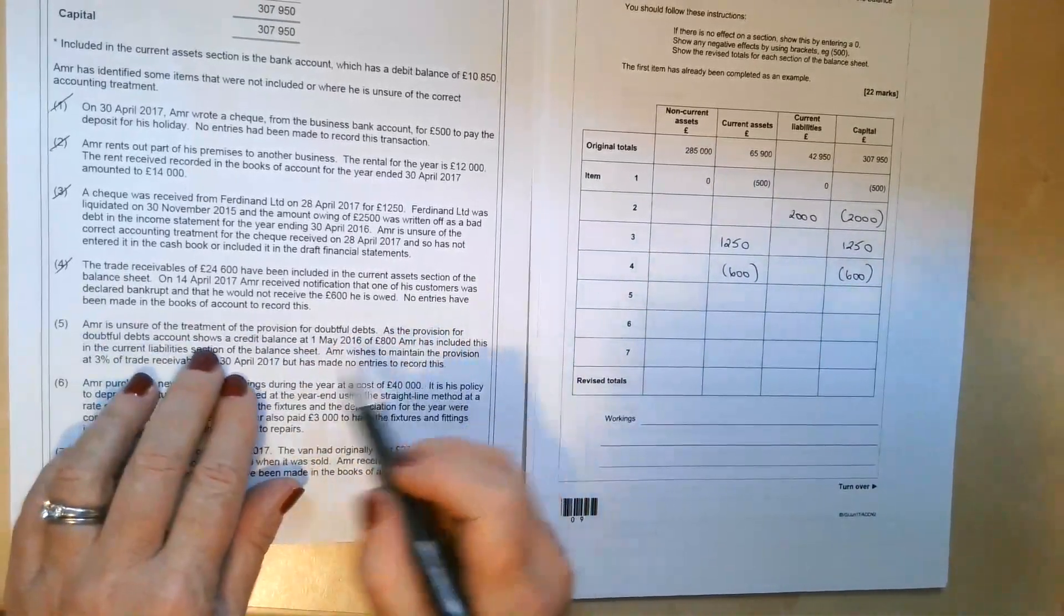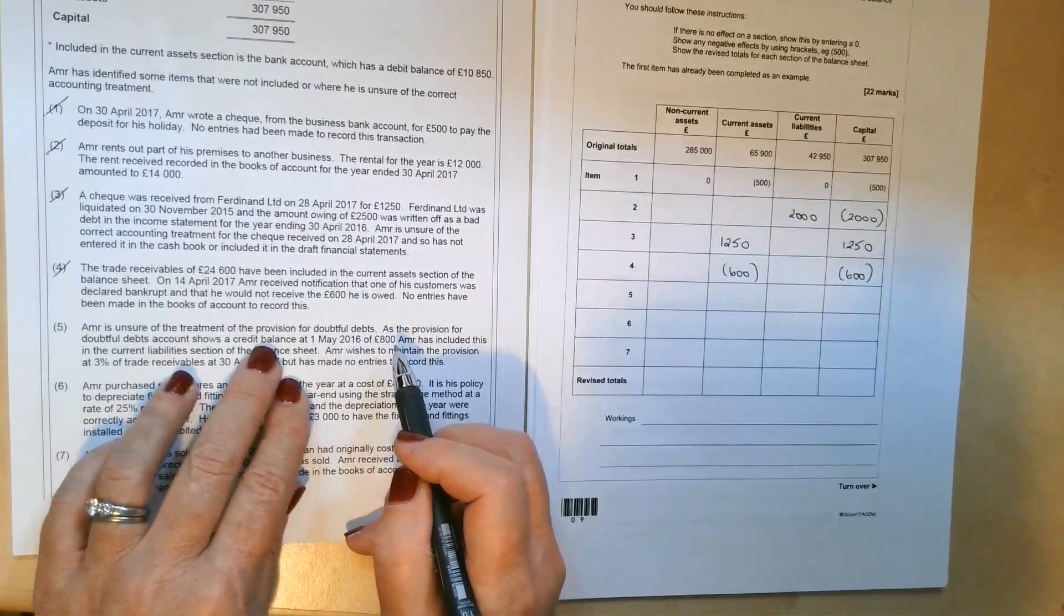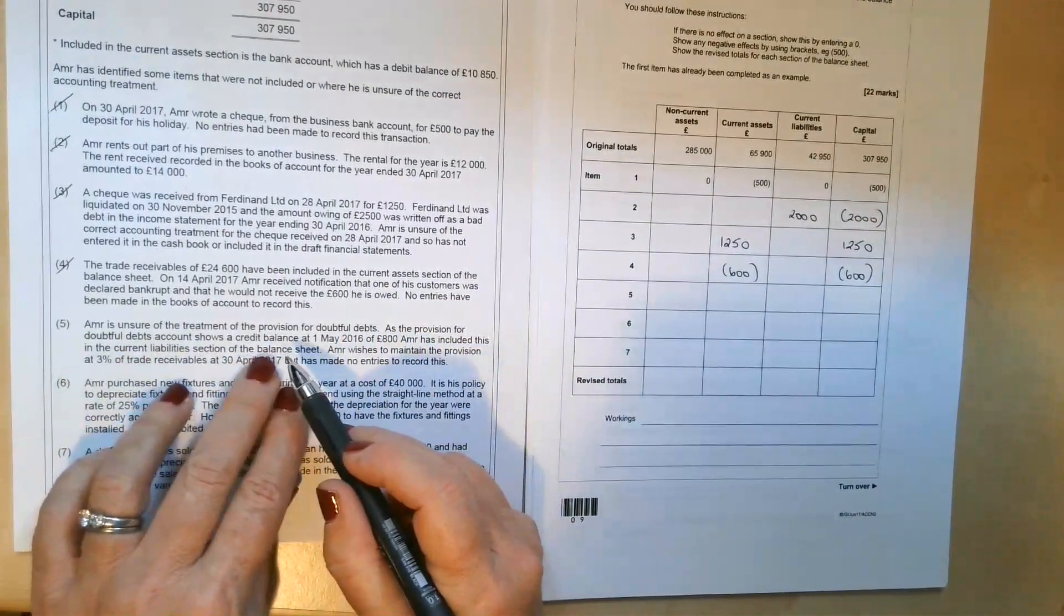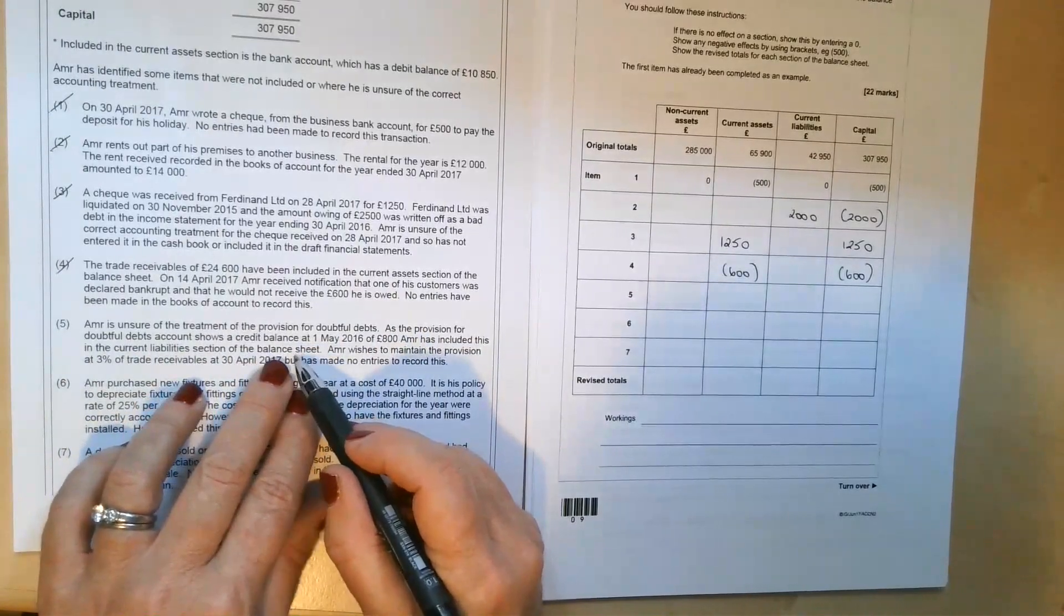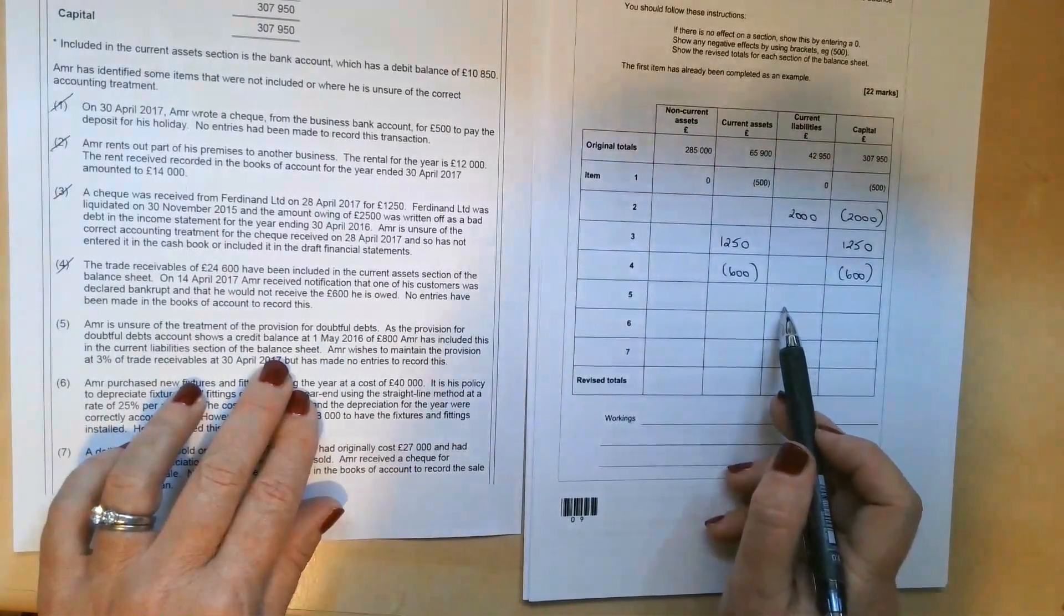But because the provision for doubtful debts account shows a credit balance at the 1st of May 2016 of £800, Amir has included this in the current liability section of the statement of financial position. So it's been included in here. It shouldn't be. We're going to need to take it out of there.